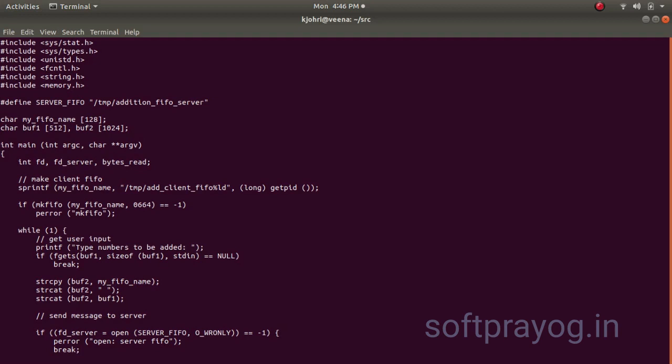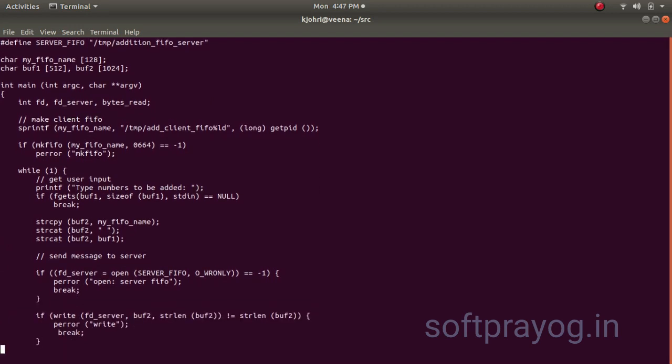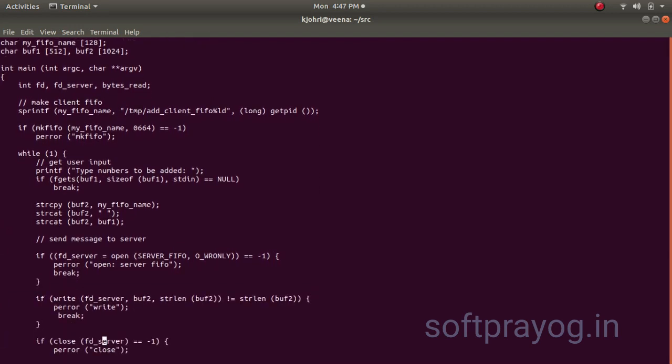So what the client does, it copies the FIFO name first, puts a space and then puts all the numbers that user has entered and sends them to the server. It opens the server FIFO and then it writes to the server FIFO, the message which contains its FIFO name and all the numbers that are required to be added up.